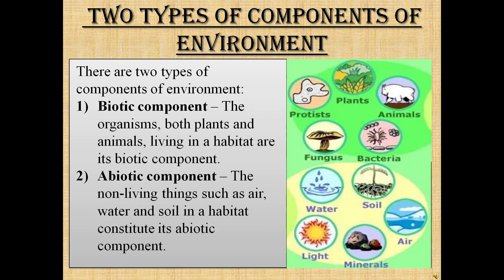There are two types of components of environment: biotic and abiotic components. The organisms, both plants and animals, living in a habitat are its biotic component. The non-living things such as air, water, and soil in a habitat constitute its abiotic component.